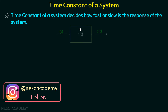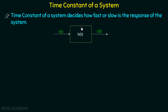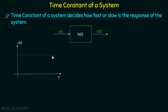Suppose we have a system where we are giving an input and observing an output. If the time constant of the system is high and we give an input to this system, then the response of this system will be slow.